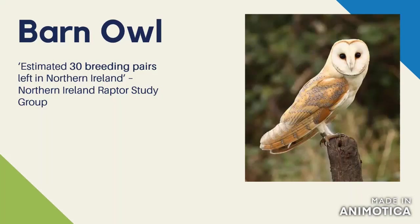Barn owls are also really vulnerable to road traffic accidents, and climate change is known to be a serious problem as prey species decline. There have also been incidents of both deliberate and accidental poisoning. The numbers are so small that they are being individually ringed and monitored. You can put up barn owl boxes, and if farmers can keep as much land as possible with long grass to provide foraging areas, we might start to bring these numbers back up.